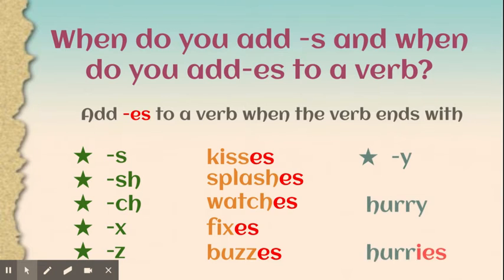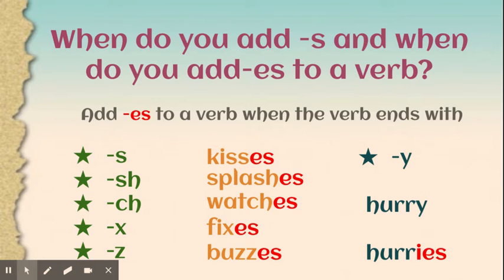There is one more special category that gets -es: words that end with a -y. Anytime a verb ends with -y and we need to add -es because it's a singular verb, we drop the -y and add -ies — so we're changing the -y to -i and then adding -es. For example, 'hurry' has the -y at the end; we change that -y to -i and add -es, making it 'hurries.'